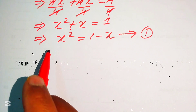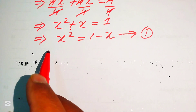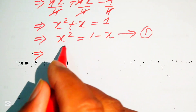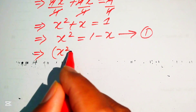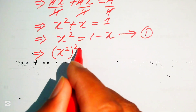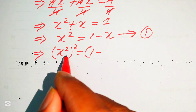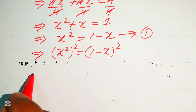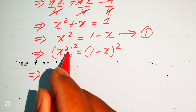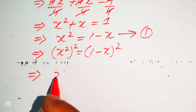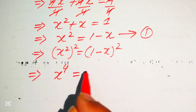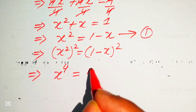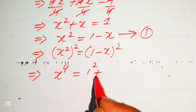We have x² = 1 − x, but we need x¹². To proceed, we square both sides of x² = 1 − x: (x²)² = (1 − x)², giving x⁴ = (1 − x)².